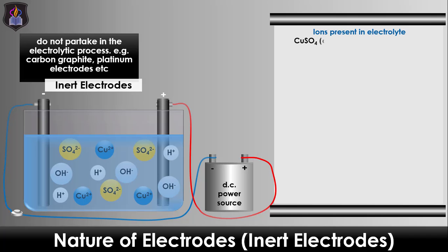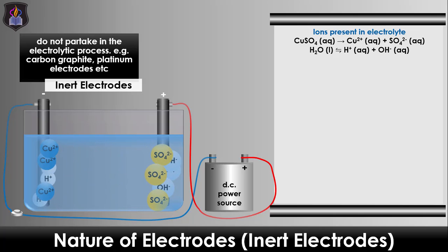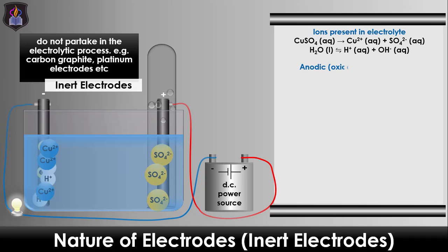Let's use the electrolysis of aqueous copper(II) sulfate solution using graphite electrodes as a case study. The electrolyte contains copper(II) ions, sulfate ions, hydrogen ions, and hydroxide ions. At the anode, sulfate and hydroxide ions compete for discharge, and the hydroxide ion is preferentially discharged to form two molecules of water and one molecule of oxygen gas, as shown in the anodic half equation.